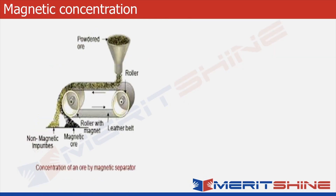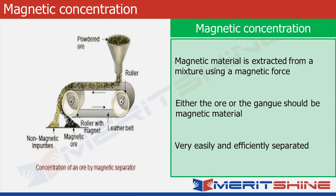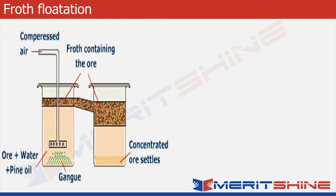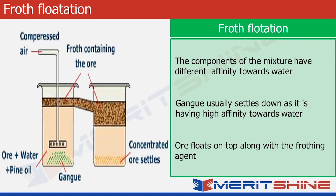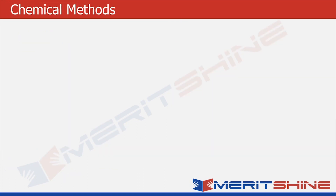The second method is magnetic concentration — if either the ore or the impurities are magnetic in nature, a magnet can be used to separate them. The third is the froth flotation process, used where gangue and ore have a difference in their relative attraction towards water. Finally, there are chemical methods.